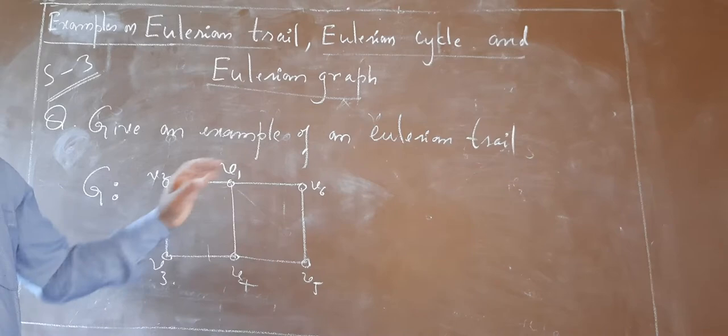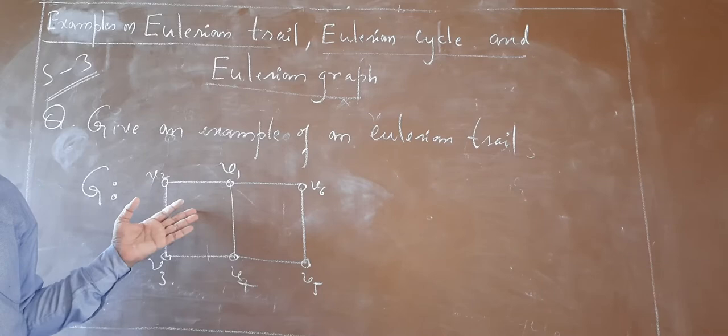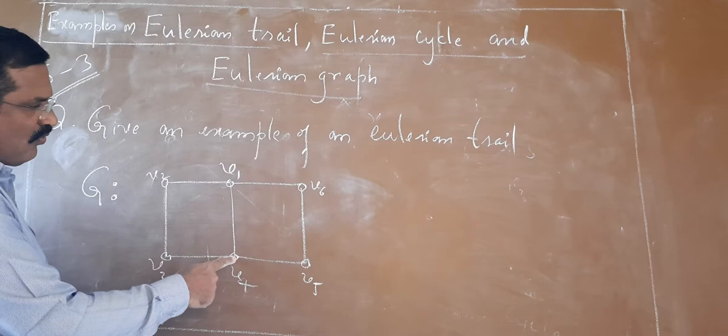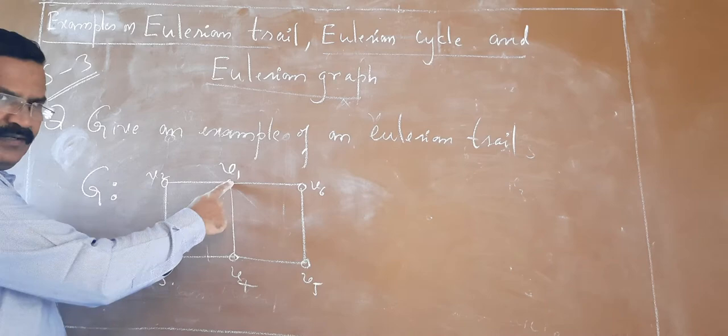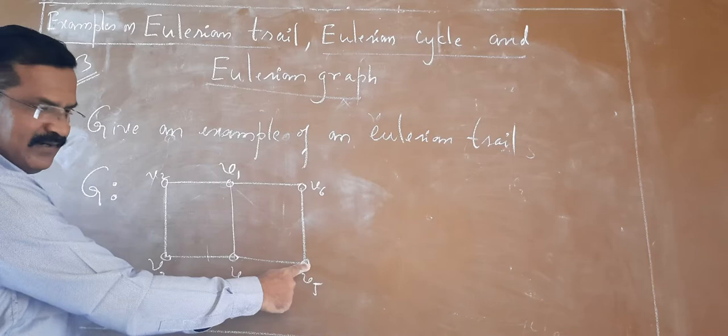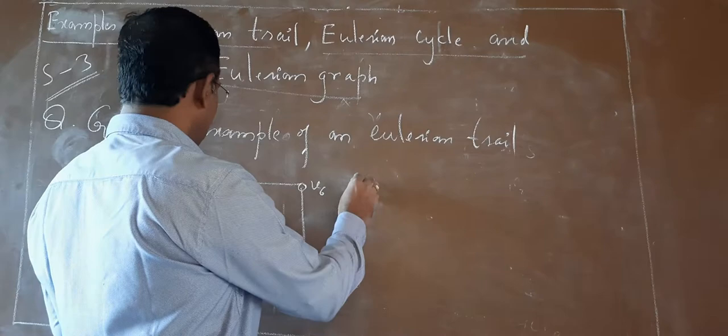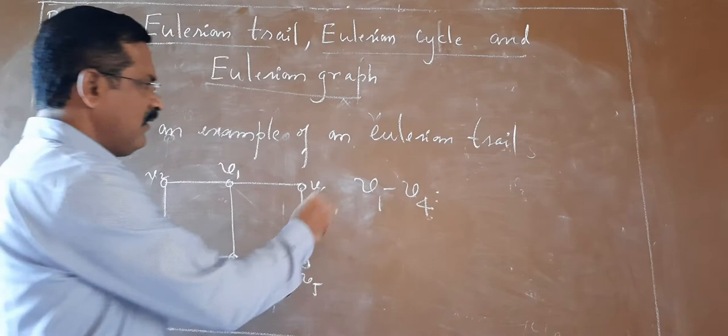How will you come to know whether this graph contains an Eulerian trail? We start at V1, then reach V2, V3, V4. Next, you may reach V1 again because repetition of a vertex is allowed. Next, V6, V5, then V4. We have started at V1 and ended at V4. So you can say it is a V1-to-V4 Eulerian trail, containing V1 and V4 as starting and ending points.